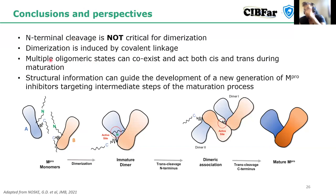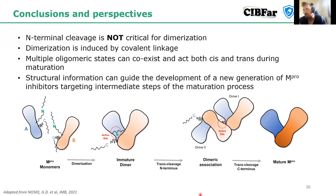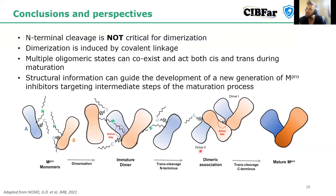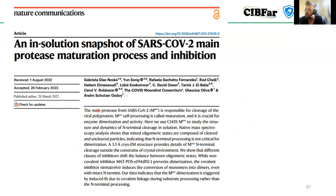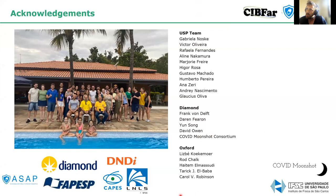The conclusions of this work are: the N-terminal cleavage is not critical for dimerization; dimerization seems to be induced by the covalent linkage as the trigger; multiple oligomeric states can coexist, acting in both cis and trans during maturation; and all the structural information can guide development of new-generation M-pro inhibitors targeting specific steps of the maturation process. This was published about a month ago in Nature Communications. Thank you all for the opportunity to present.